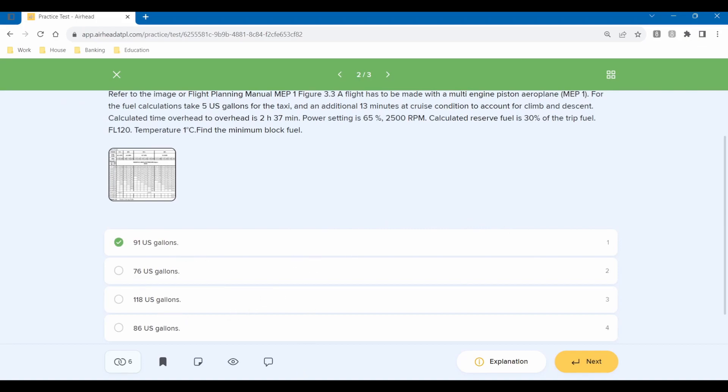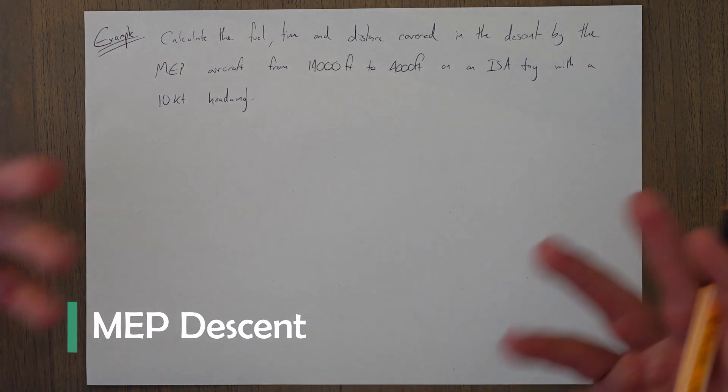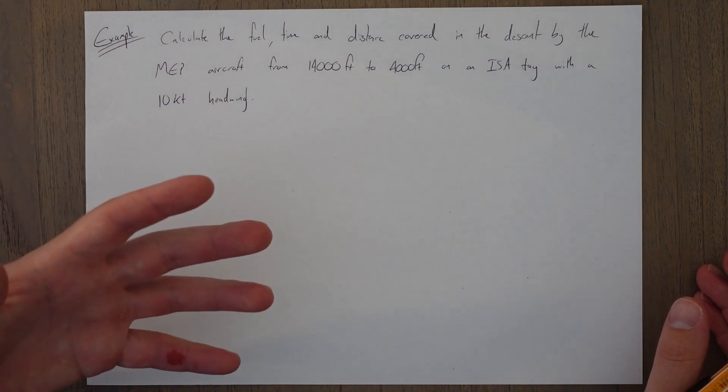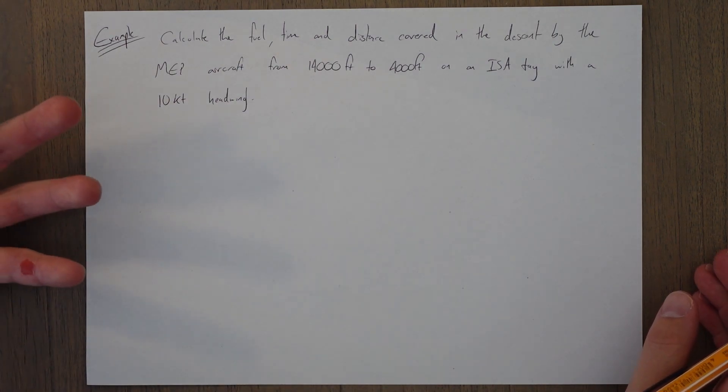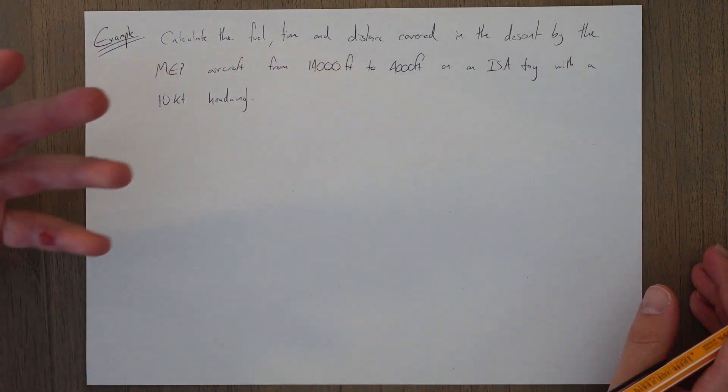One of the graphs that didn't feature in the SEP section was a descent graph, so in the MEP section there is. We can now accurately calculate the information we need to plan for our descent. It's very similar to the climb graph, giving us fuel, time, and distance.